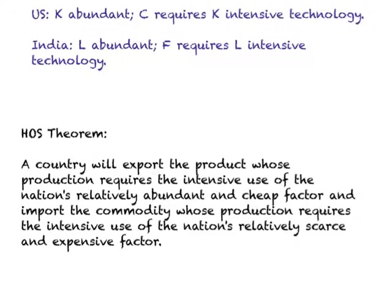What we have assumed in this model is that the US is capital abundant and clothing requires capital intensive technology, and hence we know the US will export clothing. India, on the other hand, is labor abundant and food requires labor intensive technology, and hence India will export food. Based on this, we came up with the formal statement of the HOS model.